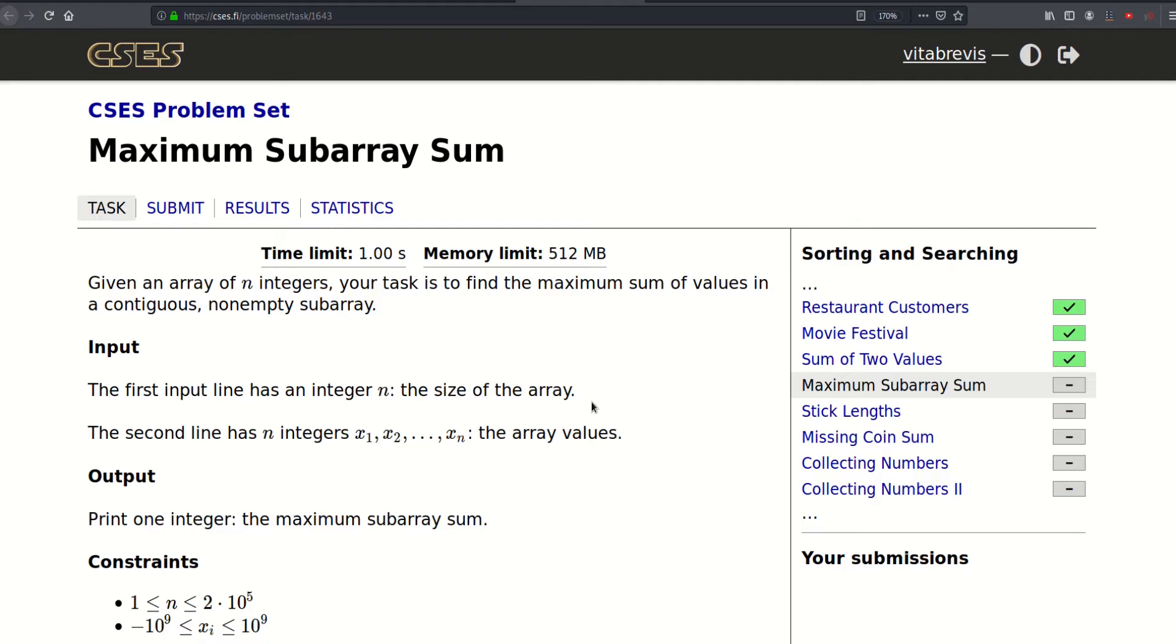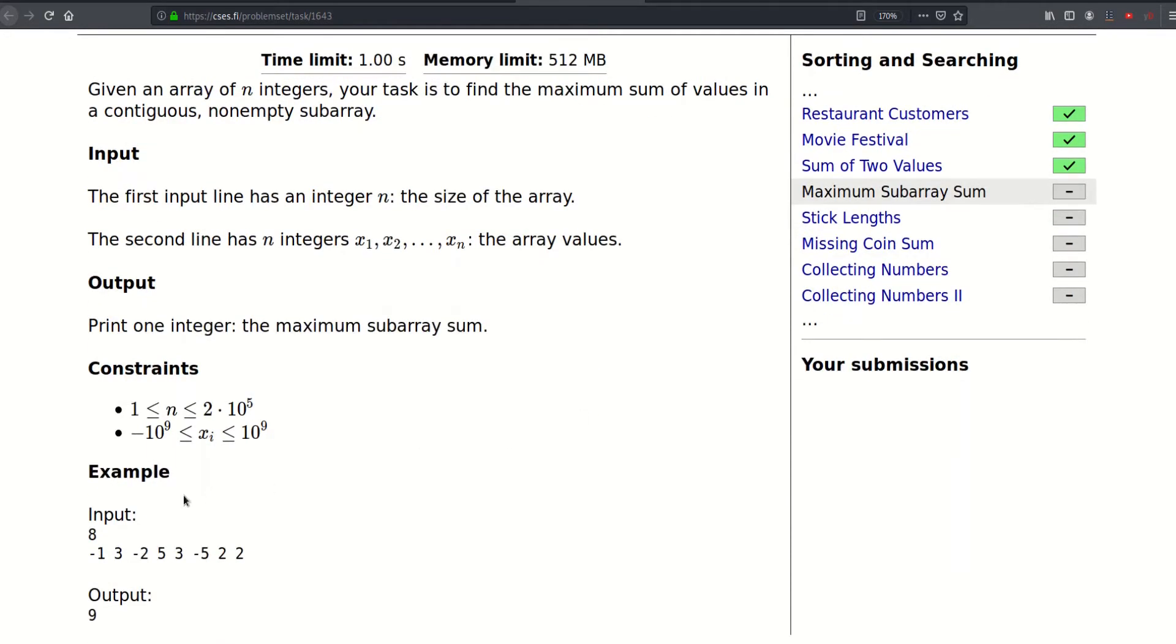This problem is very famous. It is very common. Let's check out the example here. n is 8 and we are given this array. The answer here is 9 and we would get that if we take this subarray. We would get 11 minus 2 which is 9.